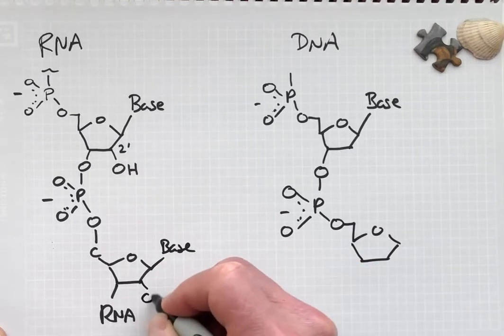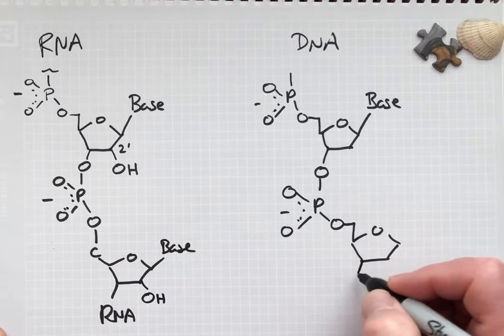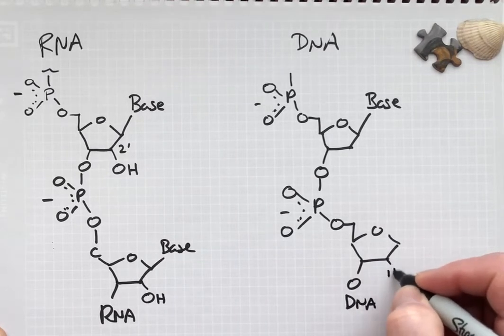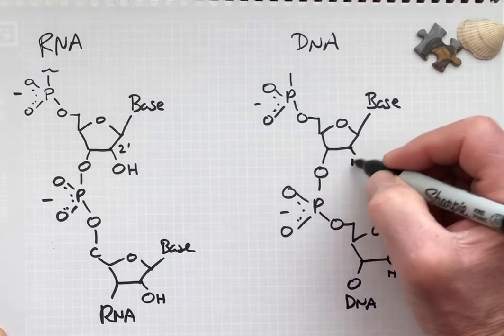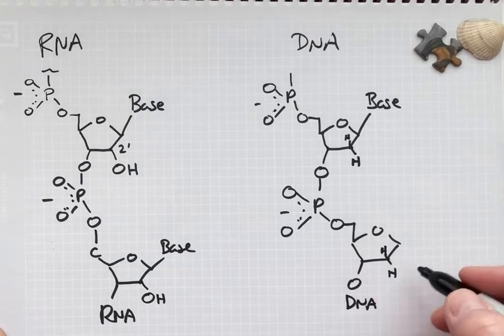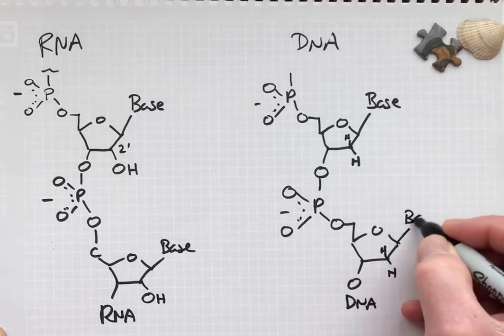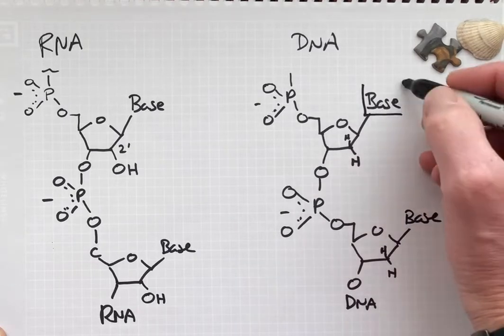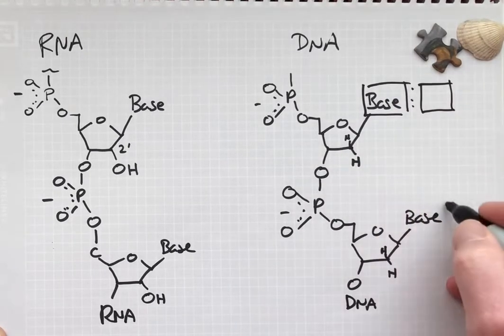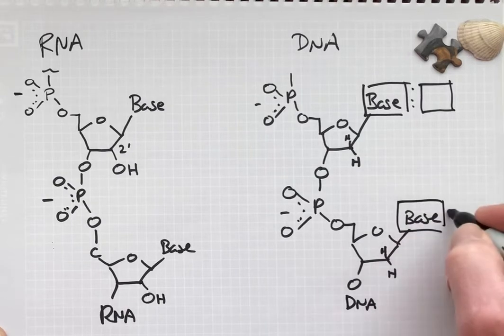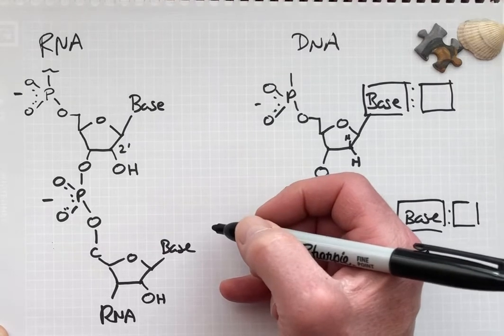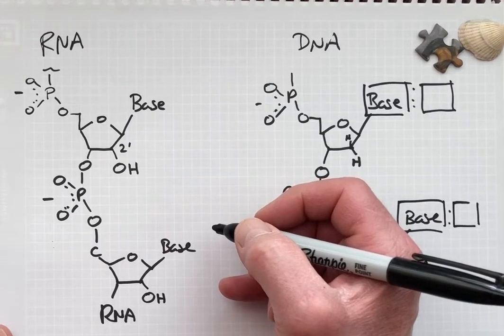For the RNA we have the two prime hydroxyl. For DNA we have at the two prime a deoxy, meaning two hydrogens attached here and no hydroxyl group. These bases for DNA are often base paired to form double-stranded structure. There are double-stranded structures in RNA, but they are synthesized initially in single-stranded form generally.